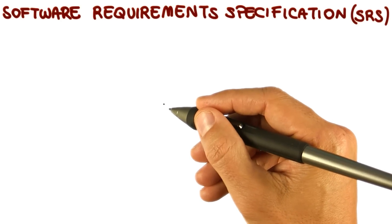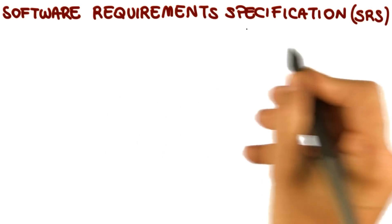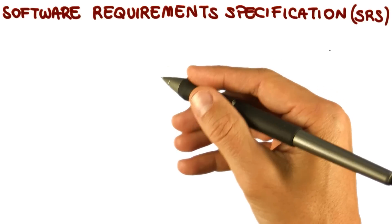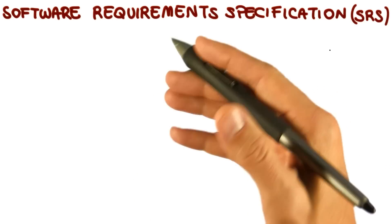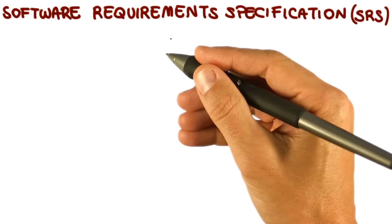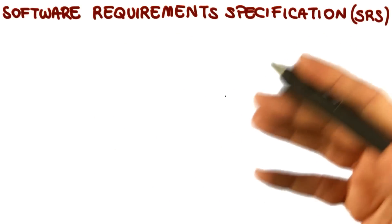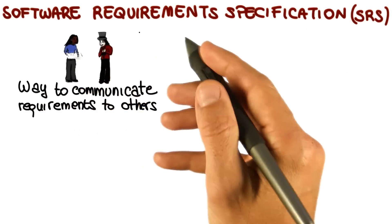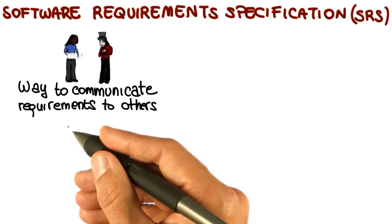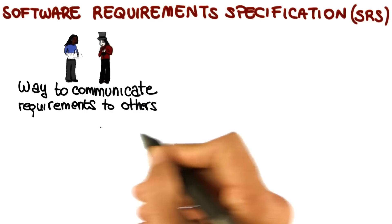Before I conclude this lesson, I want to say a few additional things about the software requirement specification document, or the SRS. I want to do that because this is a very important document, and some of the projects actually require you to produce one. The software requirement specification document is an important, fundamental way to communicate requirements to others.